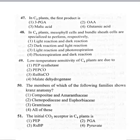Coming to the 51st question: the initial carbon dioxide acceptor in C4 plants is option 1 PEP, option 2 PGA, option 3 RuBP, option 4 pyruvate. The initial carbon dioxide acceptor in C4 plants is PEP — phosphoenolpyruvic acid. In C3 plants, the initial carbon dioxide acceptor is RuBP. So for the 51st question, the correct option is 1. The remaining bits will be discussed in the next session. Thank you.